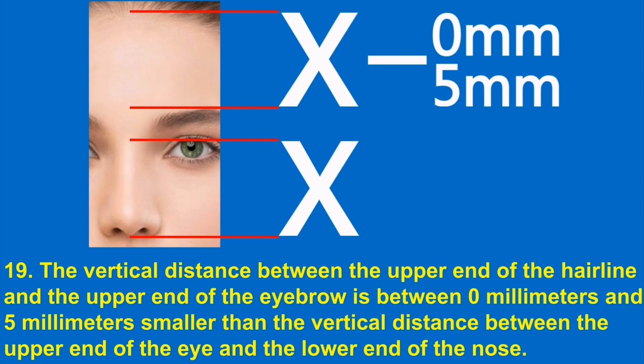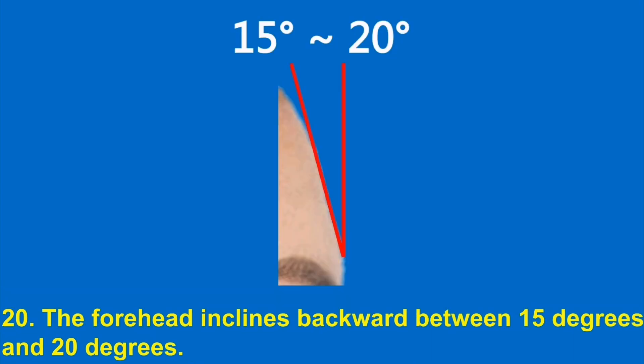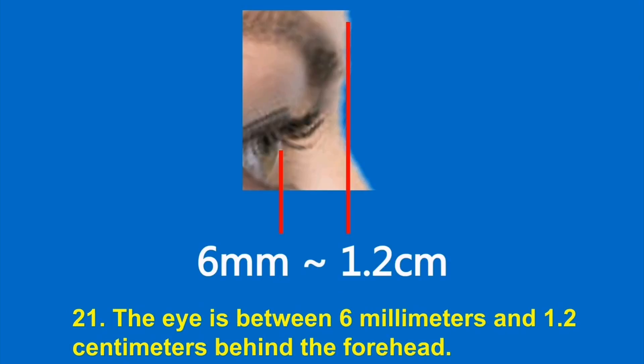19. The vertical distance between the upper end of the hairline and the upper end of the eyebrow is between 0 mm and 5 mm smaller than the vertical distance between the upper end of the eye and the lower end of the nose. 20. The forehead inclines backward between 15 degrees and 20 degrees.